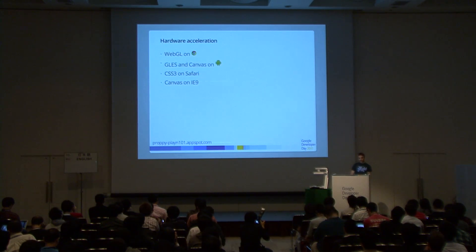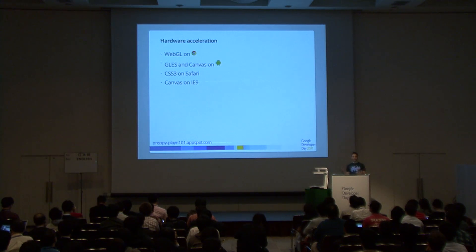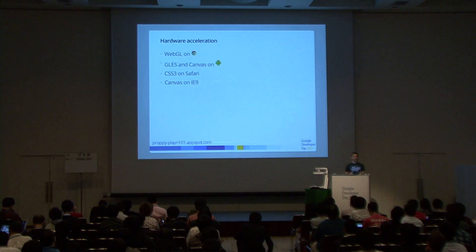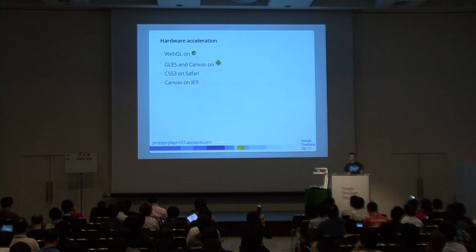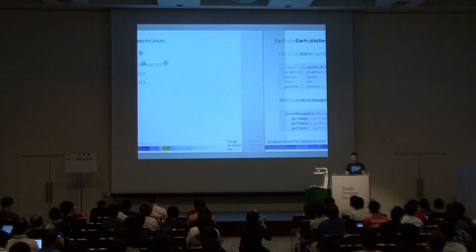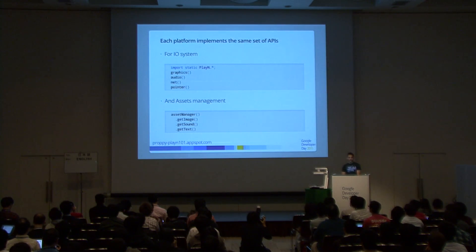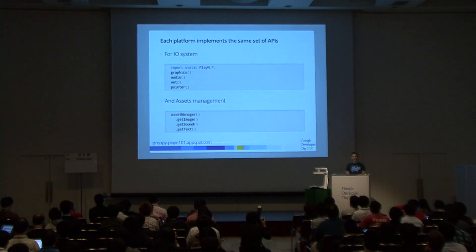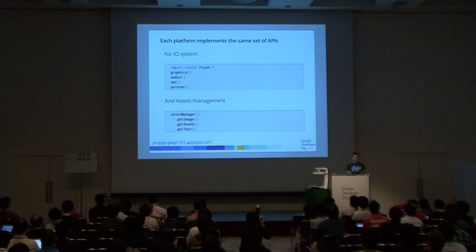PlayN tries to use hardware acceleration everywhere. When running on Chrome it targets WebGL; on Android it targets OpenGL ES and Canvas; on Safari it targets CSS3; and even on IE9 it targets Canvas. Each platform has to implement the same set of APIs — graphics, audio, networking, and input — and this is already handled inside PlayN, exposing the same primitives across all platforms.